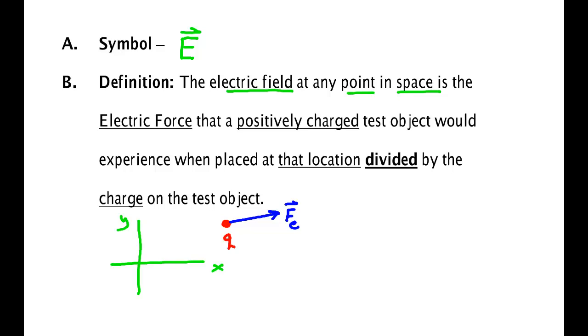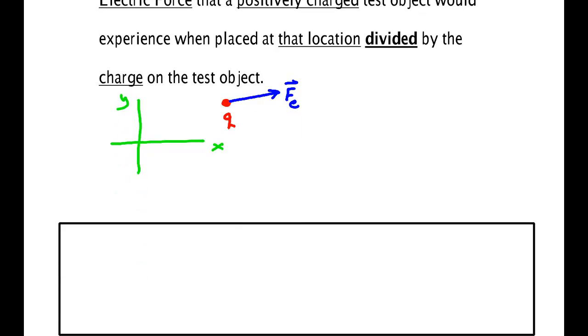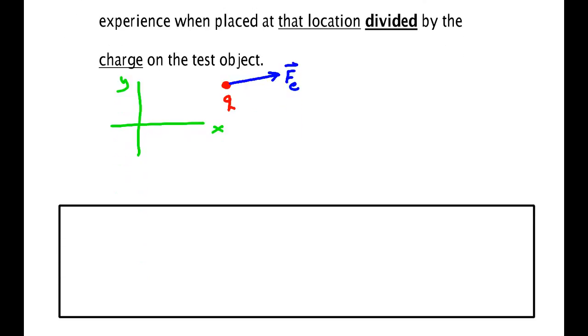And we found that force. Then the way that you would find the electric field now is you would make that measurement of Fe and you would divide it by the charge Q of the test charge that you use to measure the force. And this by definition is what we call the electric field.